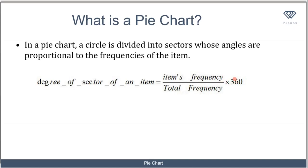It's very simple. We find the ratio of the item's frequency over the total frequency, then multiply by 360, since the sum of angles in a circle is 360 degrees.